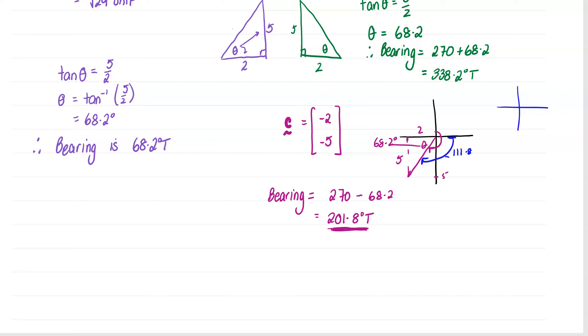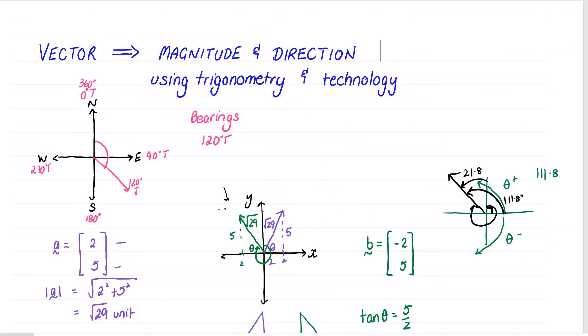So remember that when it's positive theta it's going from the horizontal anticlockwise and when it's negative it's going clockwise. And if we're then looking at that's 90 degrees there and we're adding on this 110 to go all the way around, 90 plus 110.8 is 201.8. So play around a little bit with your calculator and see if you can match up and have a bit of fun converting vectors to their magnitude and the direction using trigonometry and technology.